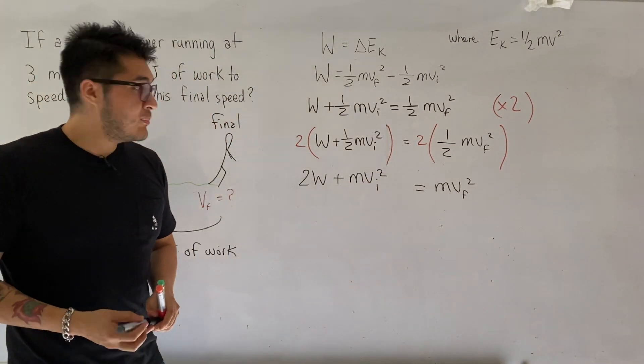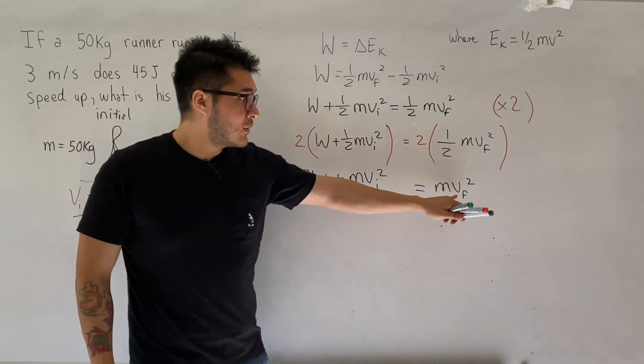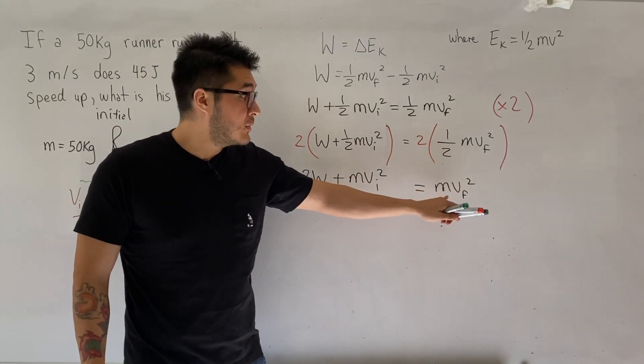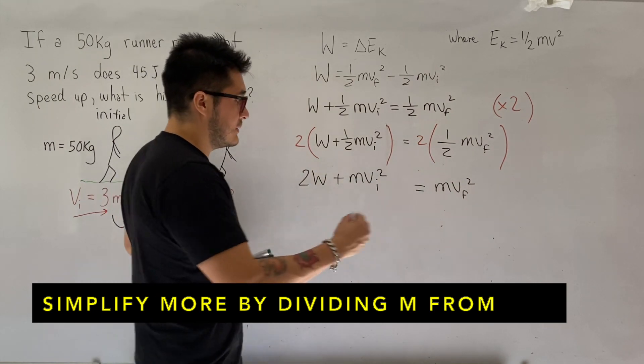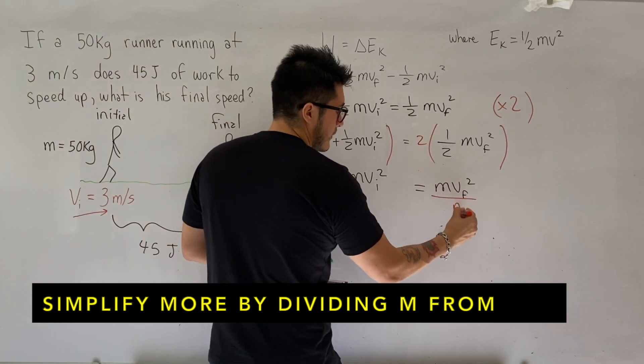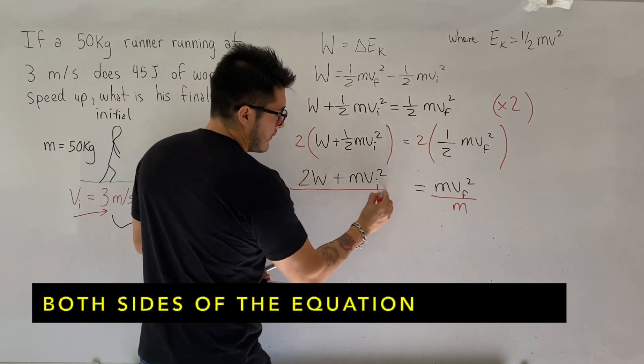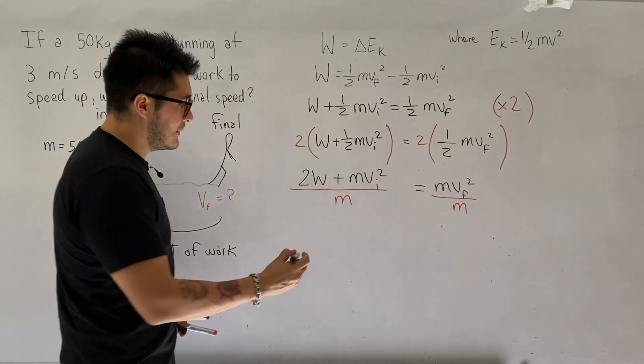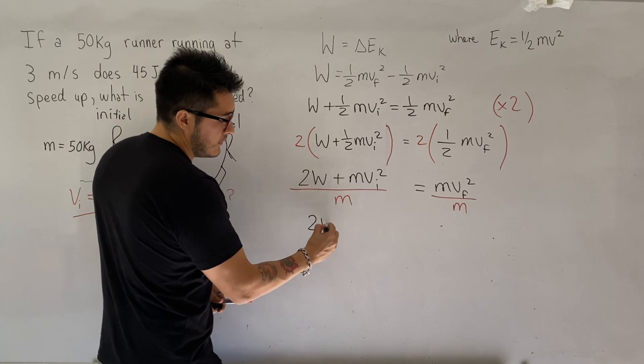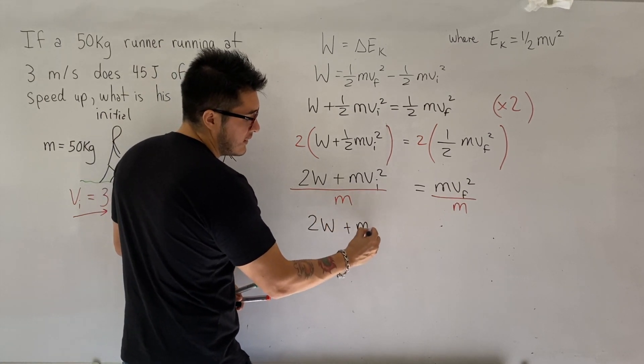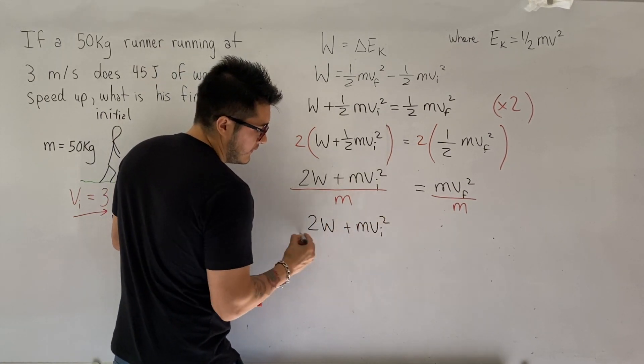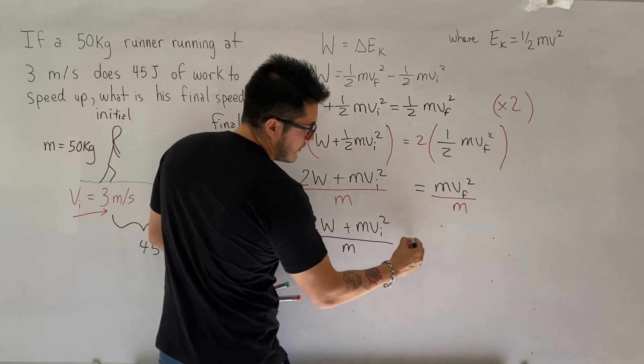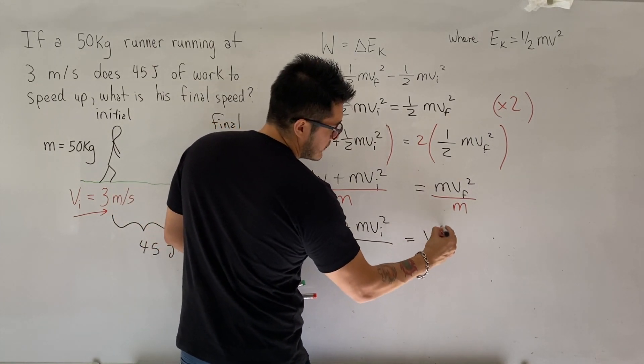But we need to further simplify this equation, because again, our goal is to isolate for v final, so you're going to divide both sides by the mass. So let's rewrite what that looks like. 2w plus mv initial squared divided by m equals to v final squared.